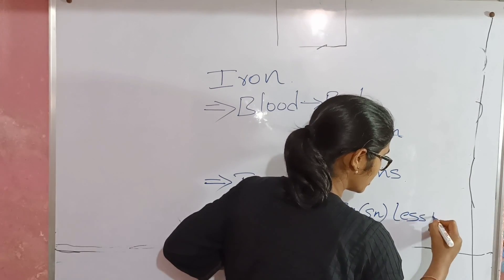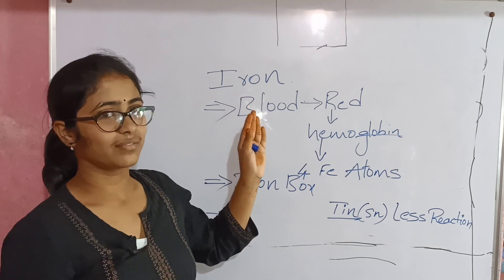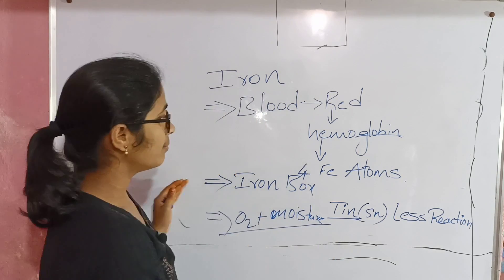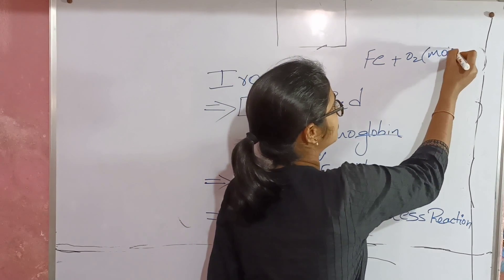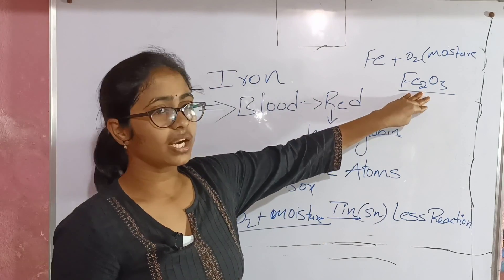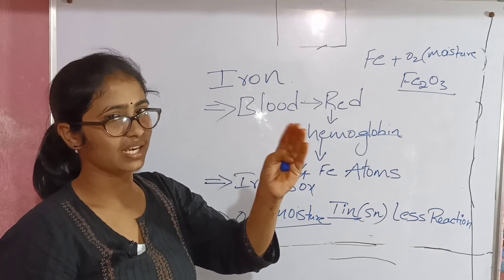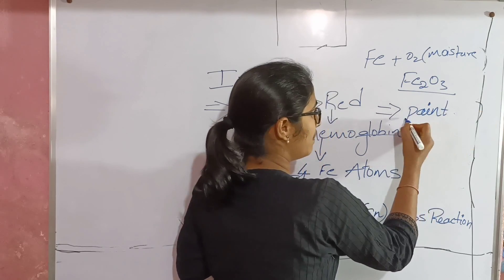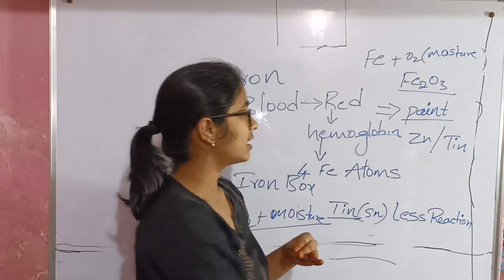We will talk about iron, oil, and moisture. Iron reacts with oxygen and moisture. The reaction is: Fe plus O2 gives Fe2O3 — that is rust, the oil layer. Prevention methods include: applying oil, applying paint, and coating with zinc — this process is called galvanization.